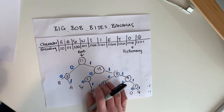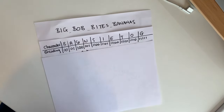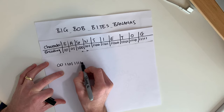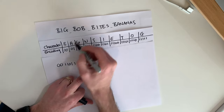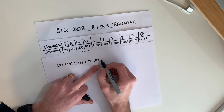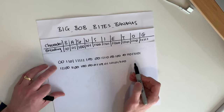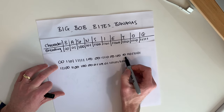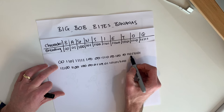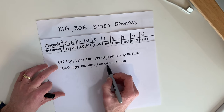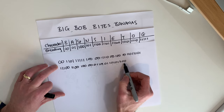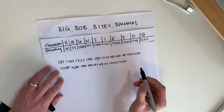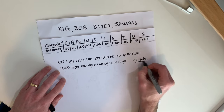Now that we have our Huffman tree and dictionary, we can encode our original message. 'Big Bob Bites Bananas' becomes: B is zero zero, I is one one zero one, G is one one one one one, space is one zero zero, and so on for Bob, Bites, and Bananas. Counting up all the bits in the encoded message gives us 67 bits total.